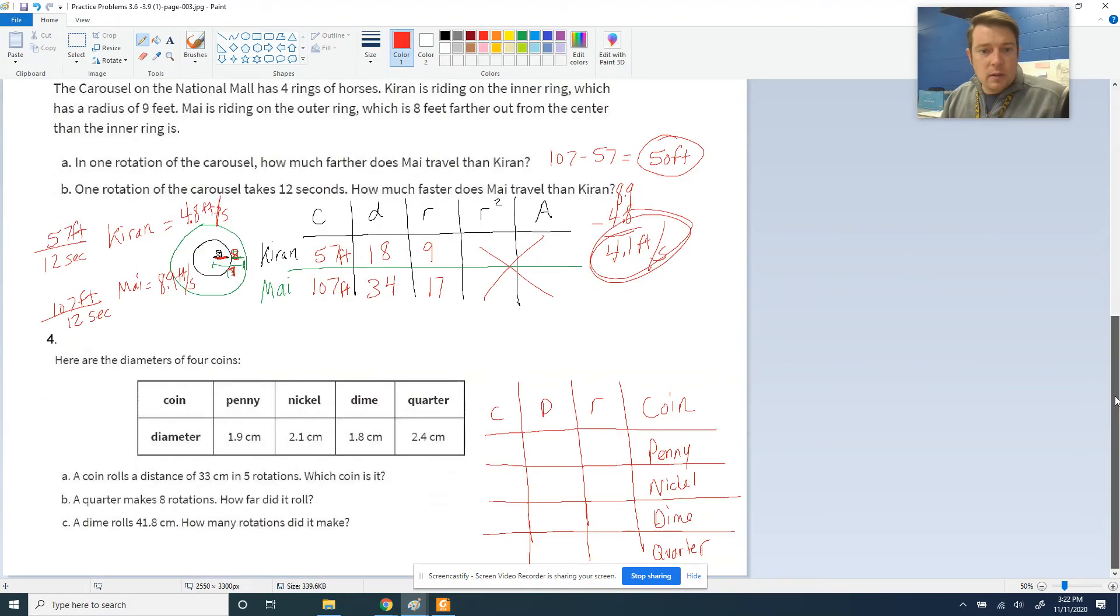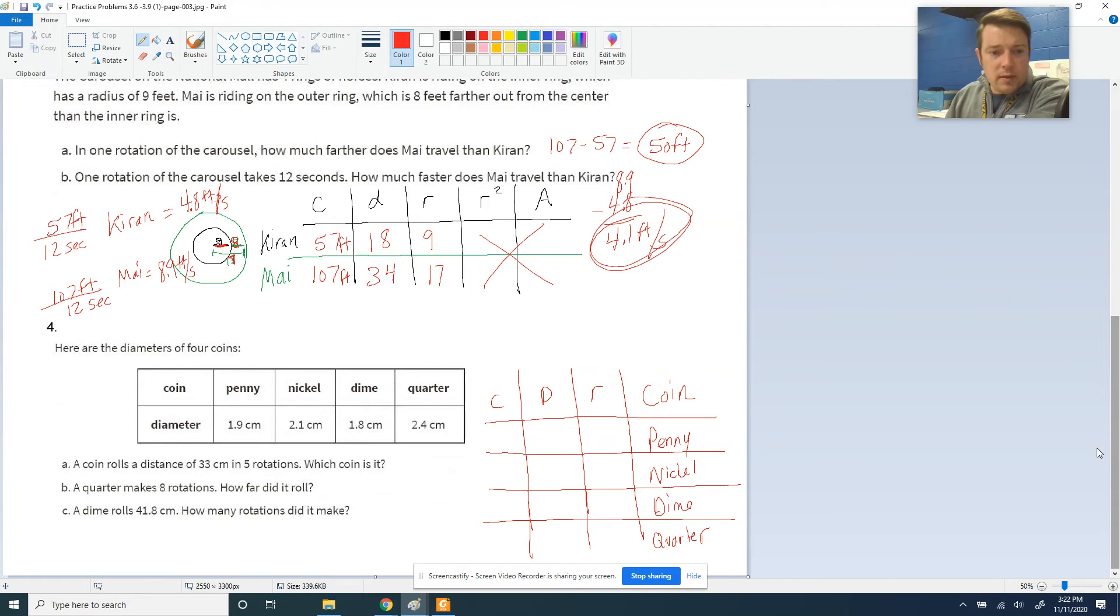And moving on to the last problem, we have all these coins and we're doing things with them. I've got a table over here set up for the circumference, diameter, and radius of all the different coins. So a coin rolls a distance of 33 centimeters in 5 rotations. Let's find all of their circumferences. We've got a 1.9, a 2.1, a 1.8, and a 2.4. Let's multiply all of these numbers by pi.